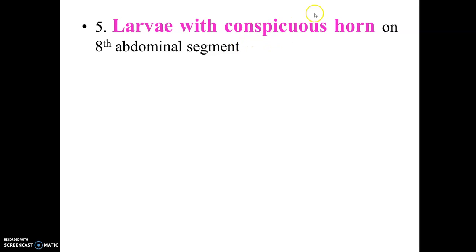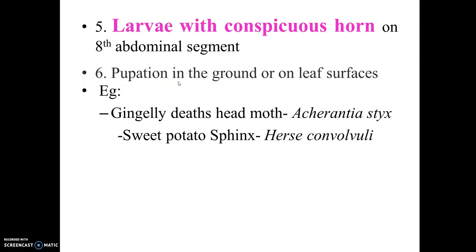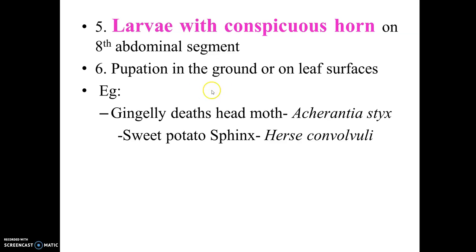The larvae possess a very conspicuous horn — a stout horn-like structure — located on the eighth abdominal segment. Pupation takes place in the ground. Examples include the death's head moth, Acherontia species, and sweet potato sphinx or convolvulus hawk moth. These are highly phytophagous insects causing considerable damage to sesame and other crops.